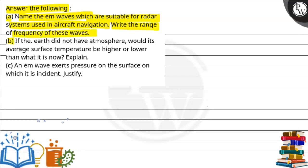Part B asks — if the earth did not have an atmosphere, would the average surface temperature be higher or lower than what it is now? Explain. And Part C asks — an EM wave exerts pressure on the surface on which it is incident; justify.